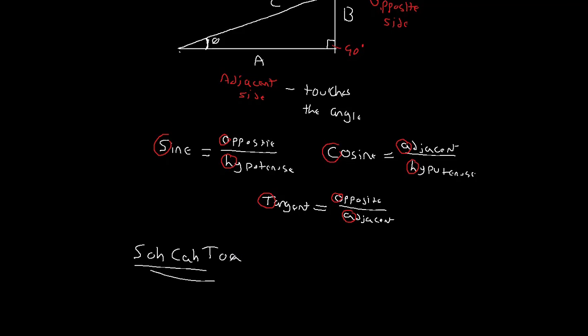So what I'm going to do in the next videos is go through some examples of actually calculating sine, cosine, and tangent of an angle given the sides of a triangle. Hopefully this made sense.